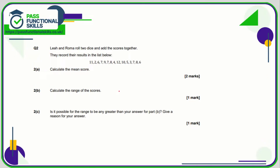Question two — we're at least allowed to use a calculator here. We're going to add all of these values together, which comes to a grand total of 105, and we're going to divide by 15 values. 105 divided by 15 comes to 7, so the mean score is 7.